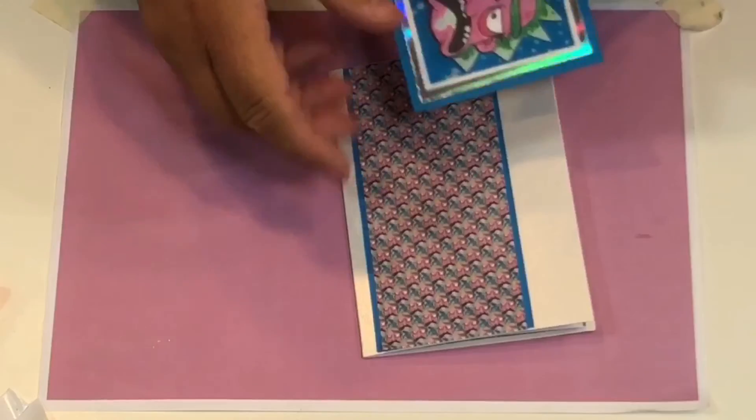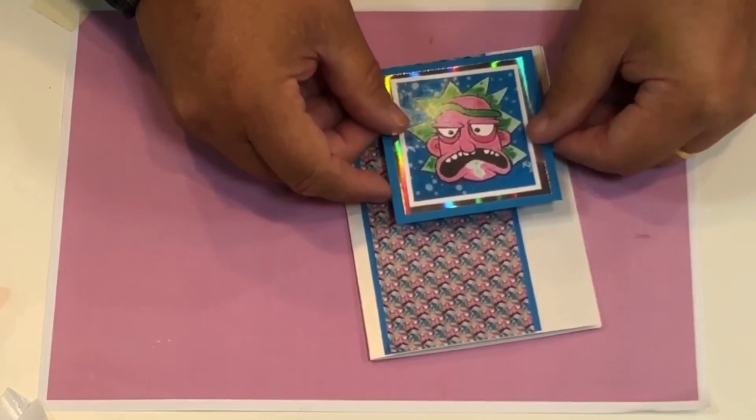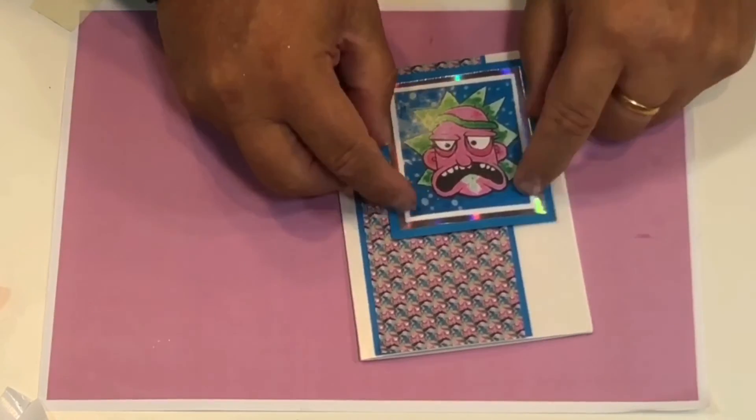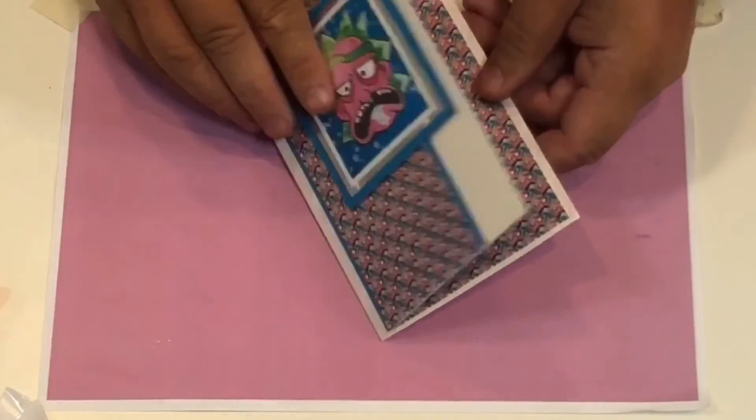And then you can decide where you want to put that one. If you want to put it down in this corner, up in this corner, to the right there, I think I'll put it there. That also leaves room if you want to add a sentiment, so it's a very simple card just using the off cuts.